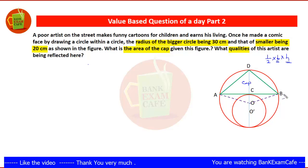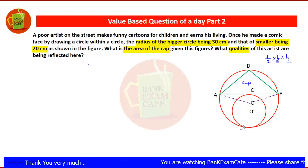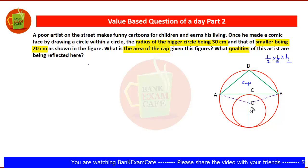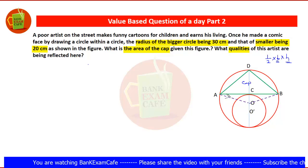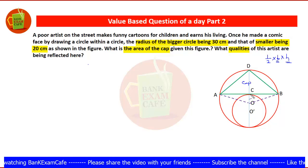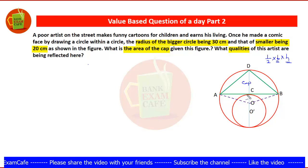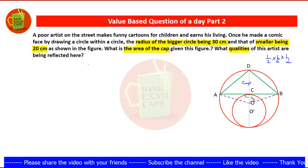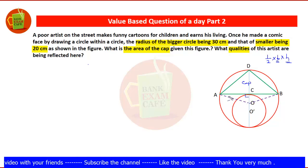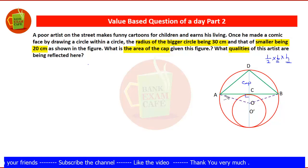To find AB, we can see that AB is a tangent of the smaller circle and O'C is a radius. By the radius-tangent theorem, the radius is always perpendicular to the tangent at the point of contact. Since C is the point of contact, this angle will be 90 degrees. Therefore triangle ACO is a right-angle triangle, and by Pythagoras theorem we can find AC.